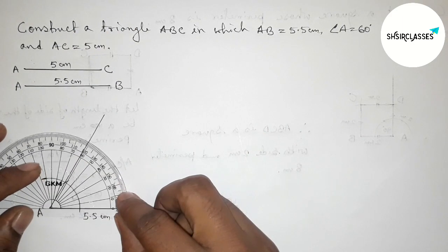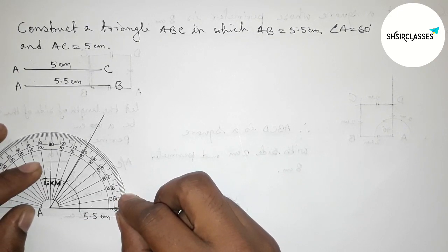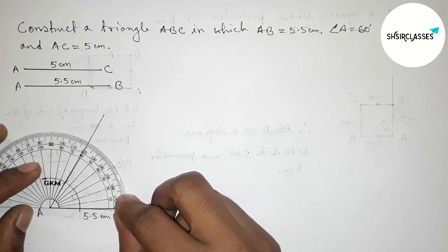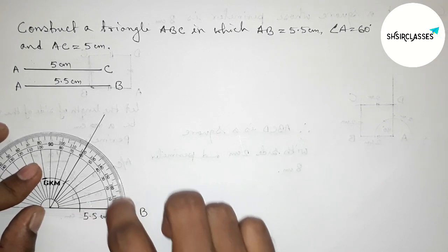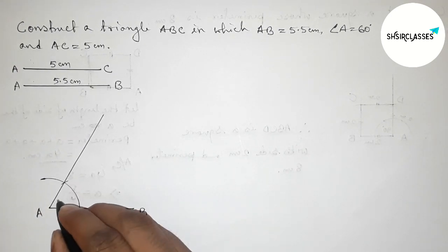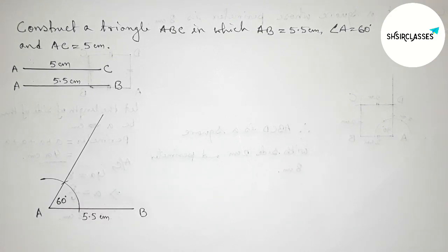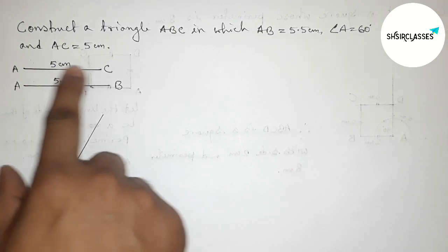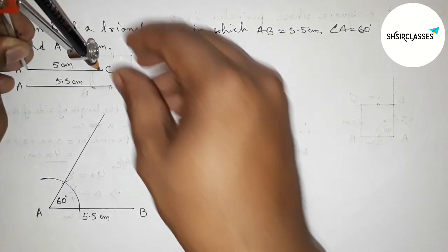Now checking with the help of a protractor whether it is a 60 degree angle or not. This is perfectly a 60 degree angle. So angle A equals 60 degrees.